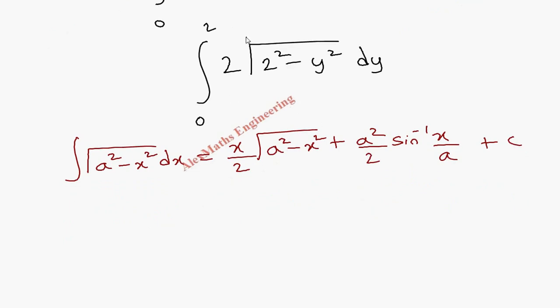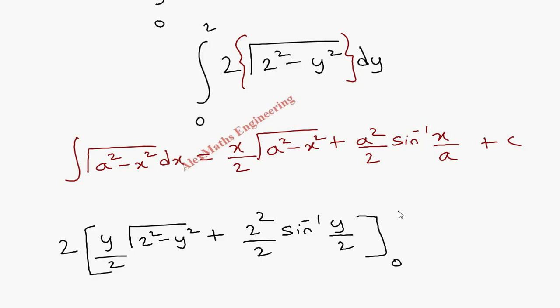So 2 is a constant taken outside. x/2, but here we have y instead of x, so (y/2)√(4-y²) + (2²/2)sin⁻¹(y/2), and limit is from 0 to 2.